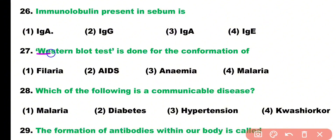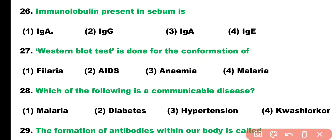Question number twenty-seven: Western blot test is done for the confirmation of: filaria, AIDS, anemia, or malaria. Correct answer is option two — Western blot test is a confirmatory test for the detection of HIV in cases of AIDS.